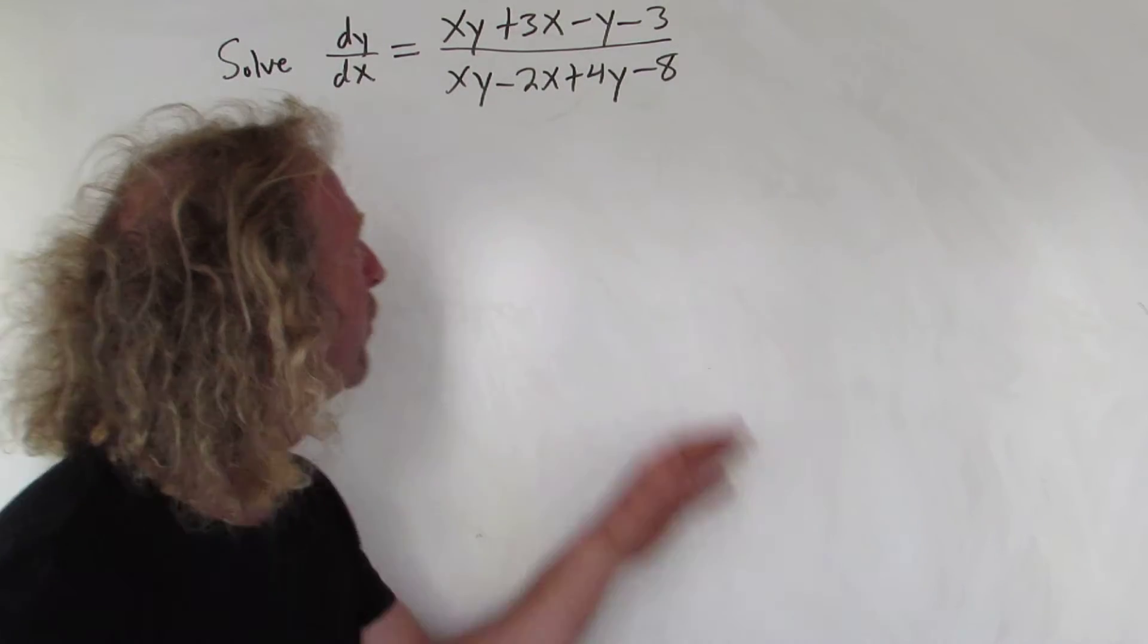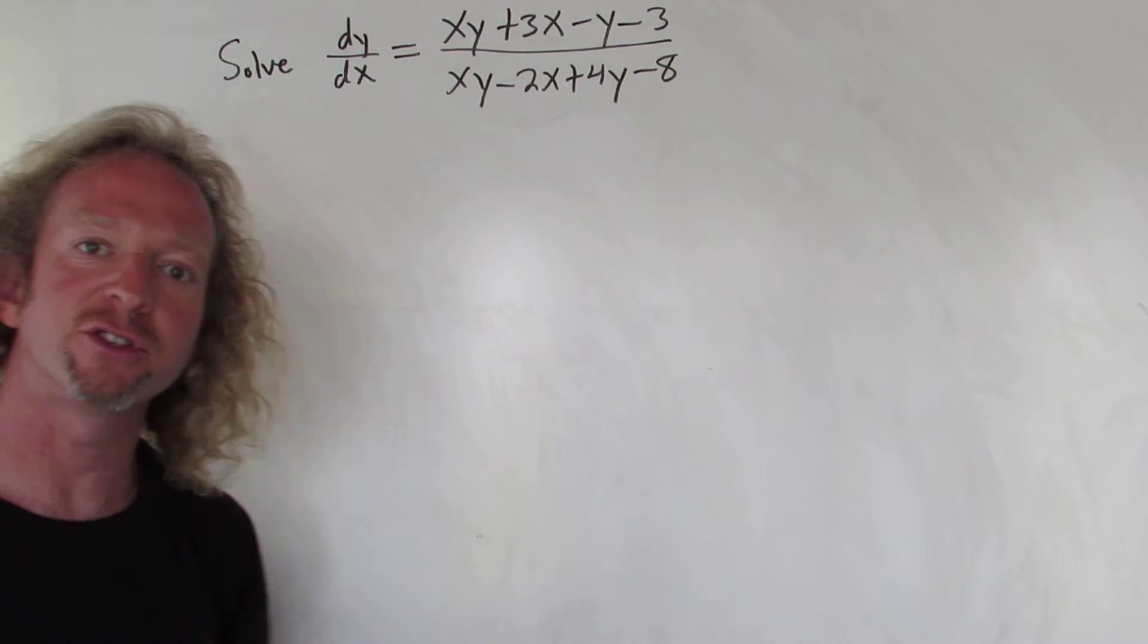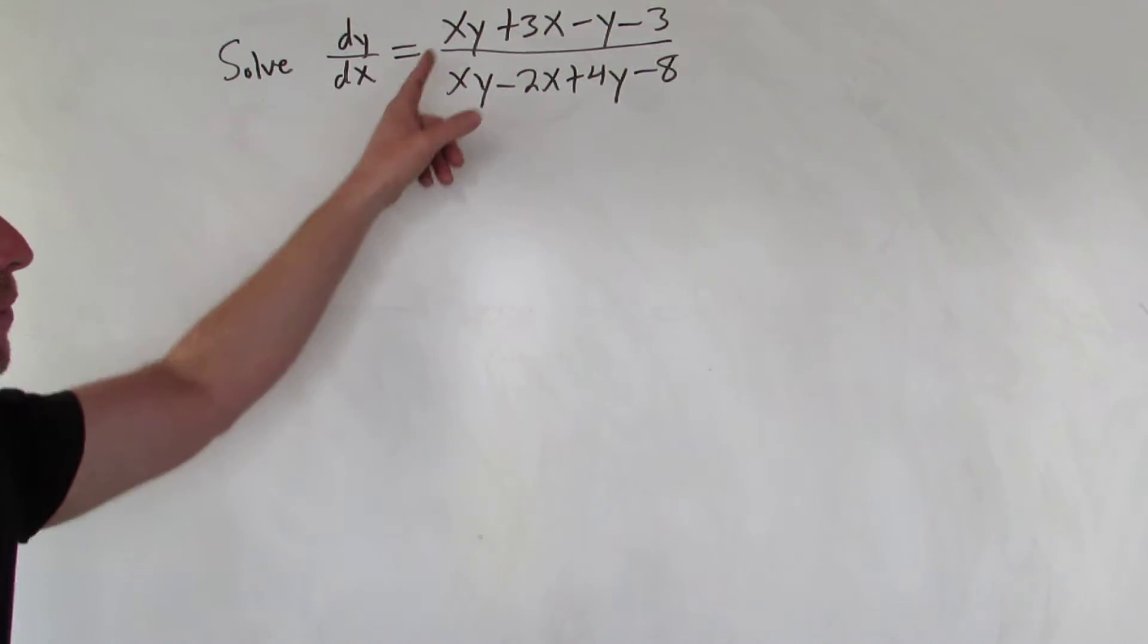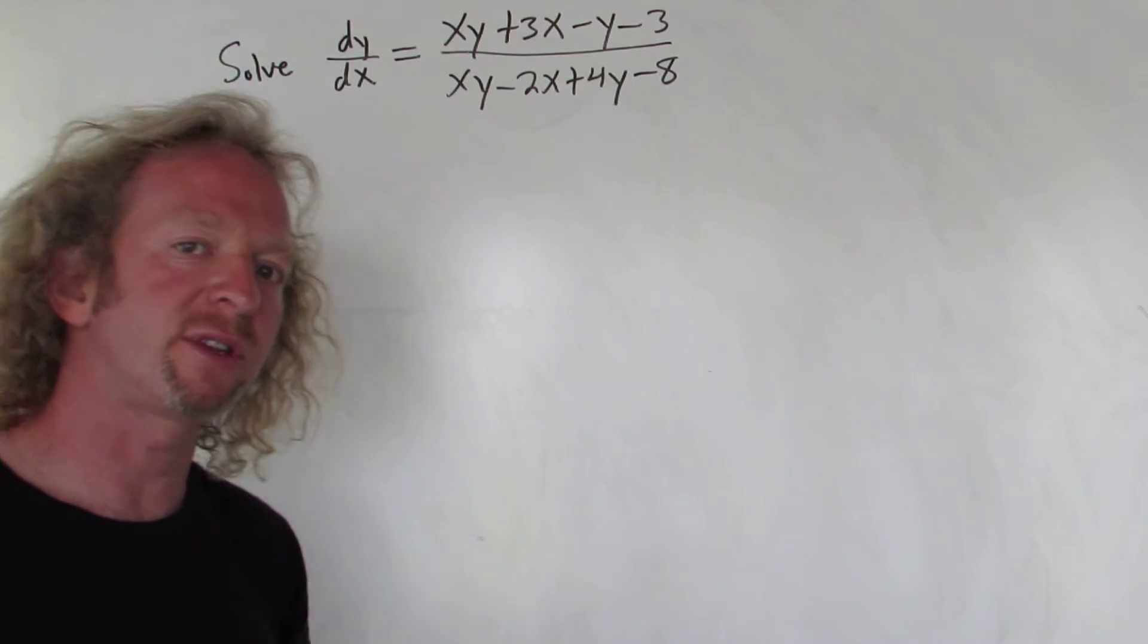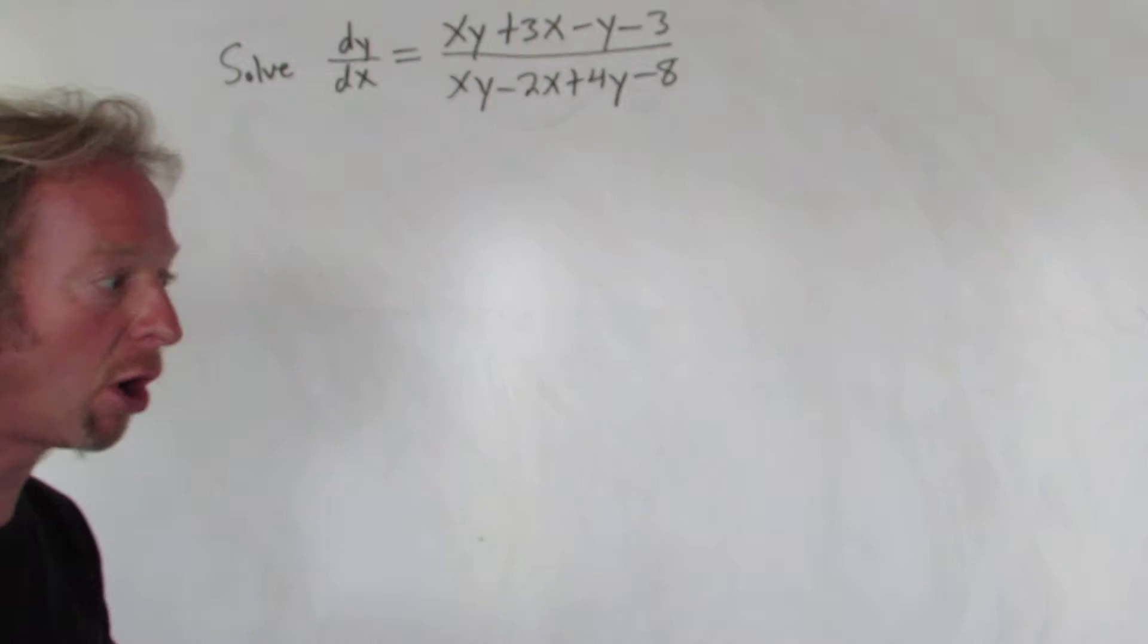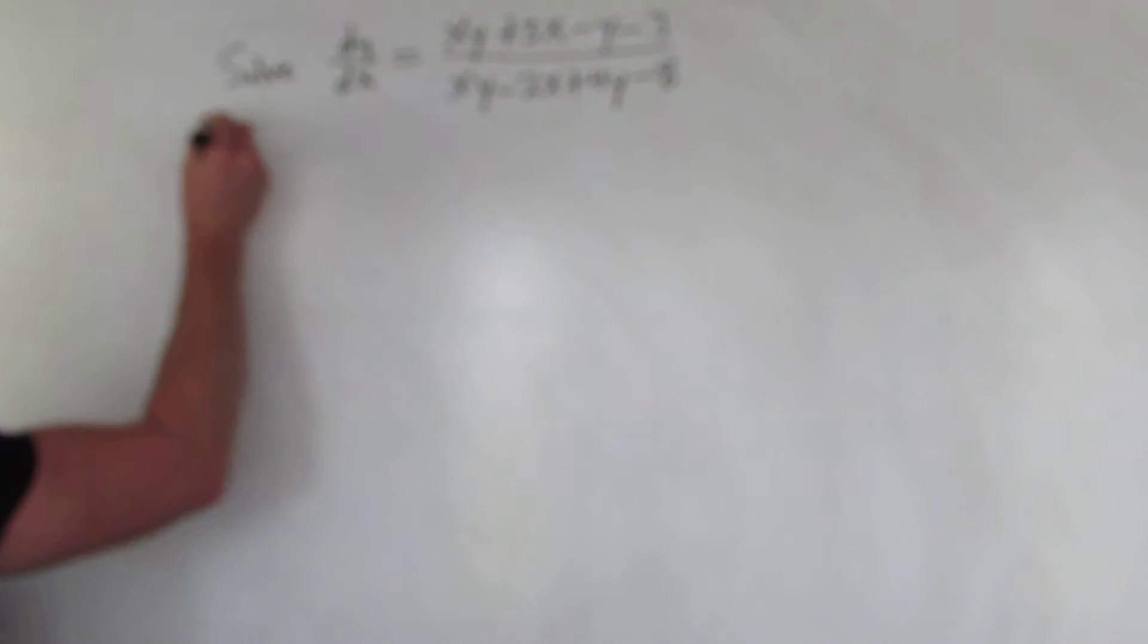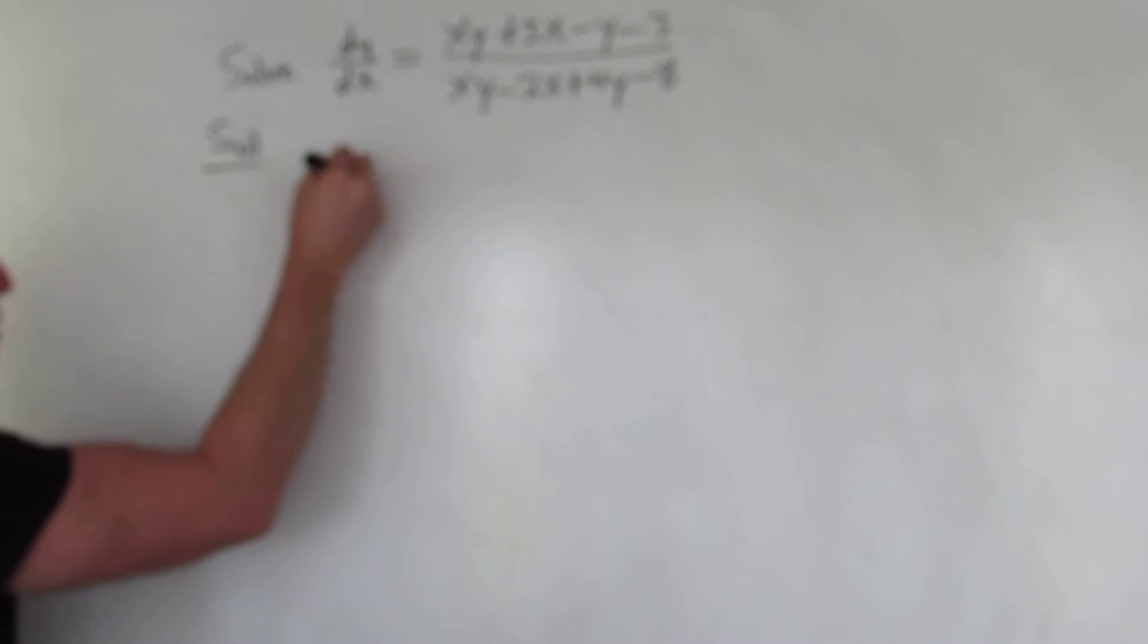Hello YouTube, in this problem we are going to solve this differential equation. It looks really scary. The thing is you have four terms in the numerator and four terms in the denominator, so whenever you have four terms you can always think about factoring by grouping. That's exactly what we're going to do in this problem.